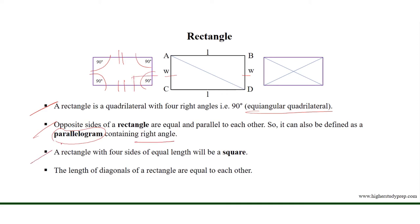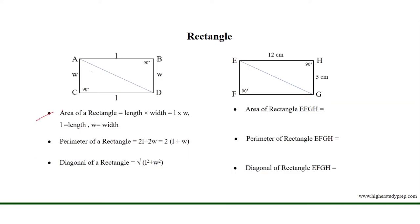A rectangle with 4 sides of equal length will be a square. The lengths of the diagonals of a rectangle are equal to each other. The area of a rectangle equals length multiplied by width, and the perimeter equals 2 times (length plus width).